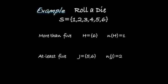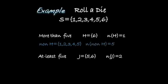Consider rolling a die again with 6 outcomes in the sample space. Event H corresponds to rolling a number more than 5 — greater than 5 — and the only such outcome is 6. The complement of H is the outcomes not in H: 1, 2, 3, 4, 5. There are 5 outcomes not in H. Notice again that 1 plus 5 equals 6, the total outcomes in the sample space.